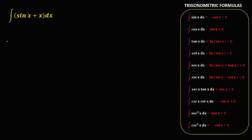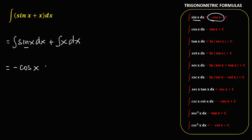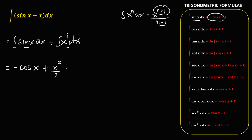Integrate every term: we have the integral of sine x dx, plus the integral of x dx, then simplify. The integral of sine x equals negative cosine x. Plus the integral of x dx — since the integral of x to the power n dx is equal to x to the power n plus 1, over n plus 1 — so using this formula, that's x to the power 2 over 2, then plus c. So this is the final answer.